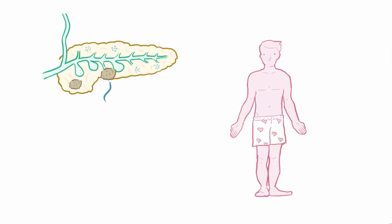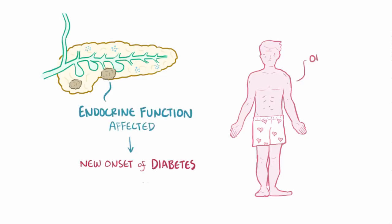If instead the tumor affects the endocrine function of the pancreas, then a new onset of diabetes in an older patient might also be a sign of pancreatic carcinoma.